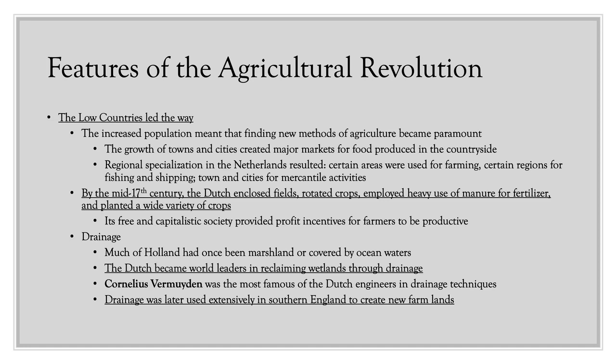In the Agricultural Revolution, the Low Countries — Belgium and especially the Netherlands — led the way. An increased and concentrated population meant the Netherlands had to find new methods of agriculture for survival. The growth of towns and cities created major markets for food produced in the countryside, so subsistence agriculture was no longer sufficient. This led to regional specialization: certain areas for farming, others for fishing and shipping, and towns for mercantile activities.